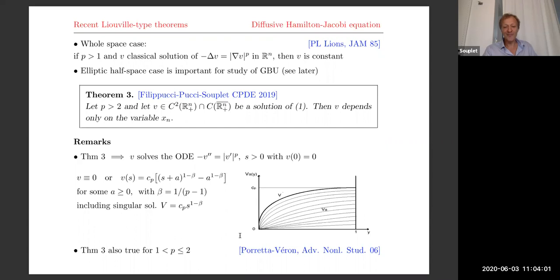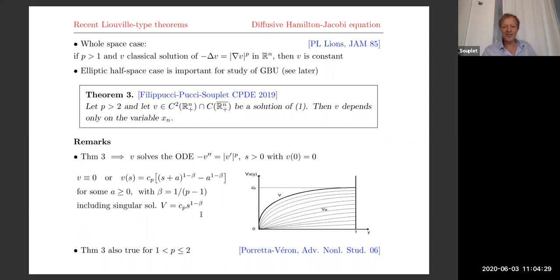Let me mention a related previous result by Alessio Porretta and Laurent Véron. They showed one-dimensionality in the range P less than or equal to two. The proof is rather different and the structure of solutions is quite different in that case. Now, the proof of our theorem is not very difficult to state, and it has lots of applications. In fact, going from Theorem 3 to the applications is a lot more difficult than establishing Theorem 3 itself.